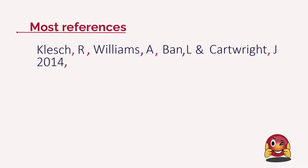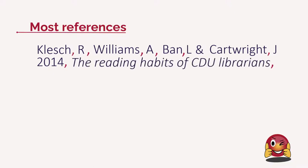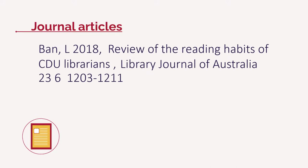There is a comma after all titles. For journal articles, put a comma after the journal title. The issue number is in brackets, followed by a colon and the page numbers. Add a full stop after the page information. There are single punctuation marks around the article title. Remember that journal titles are in italics.